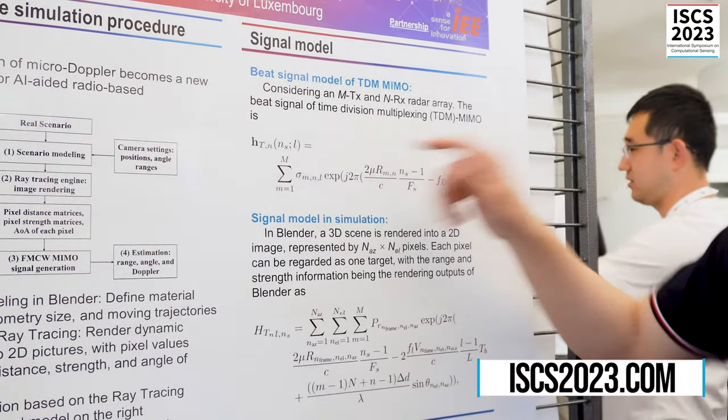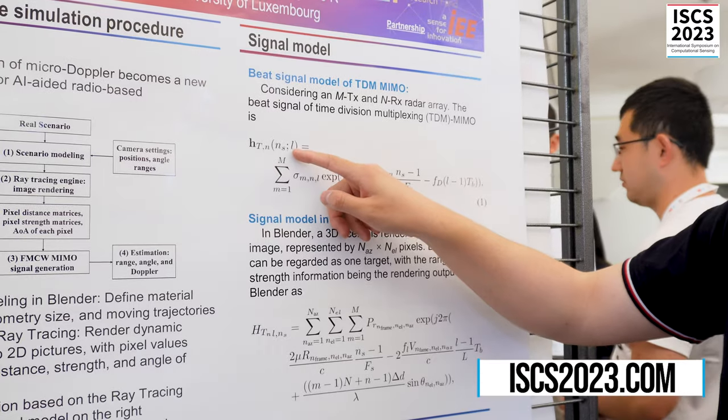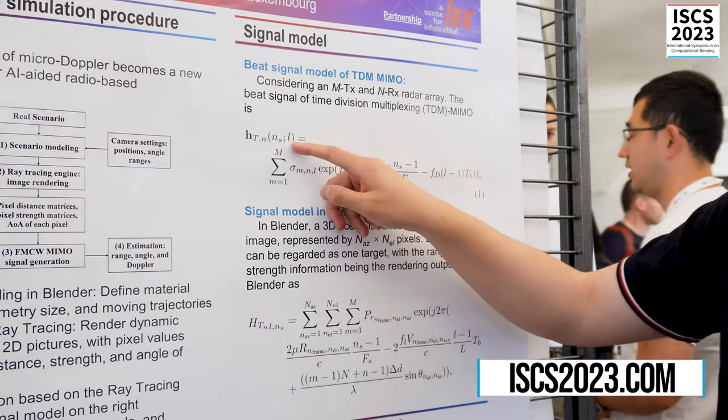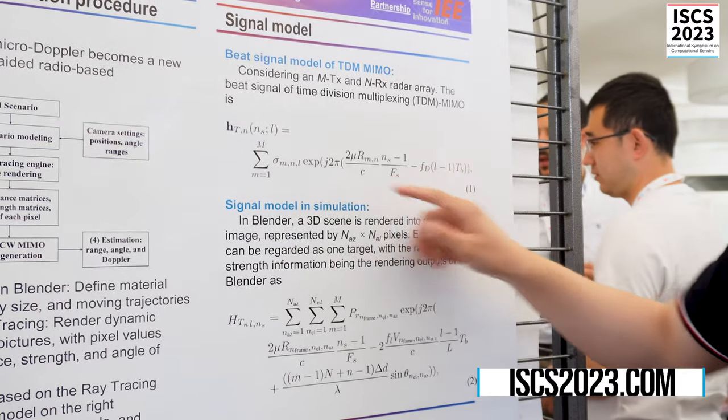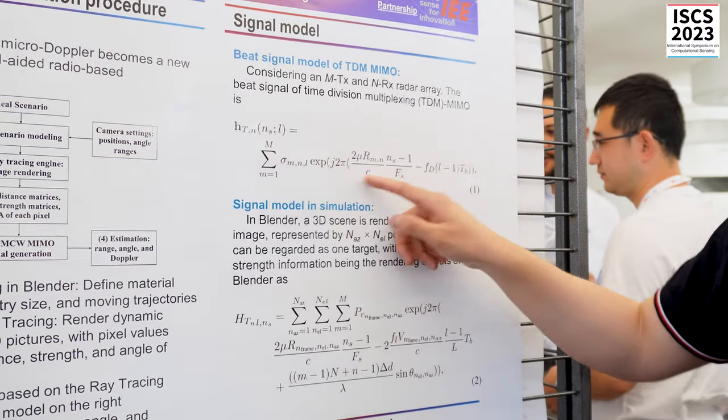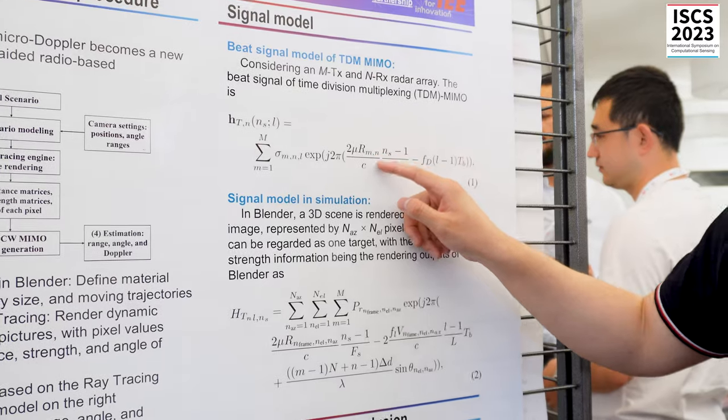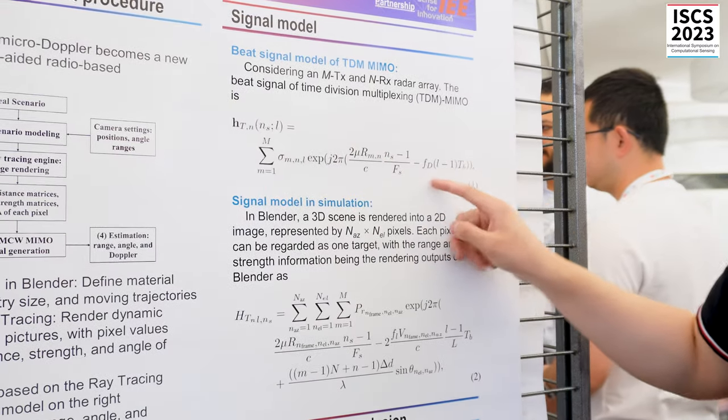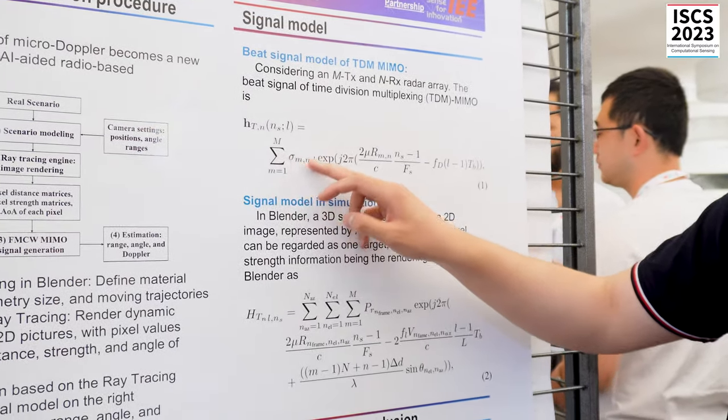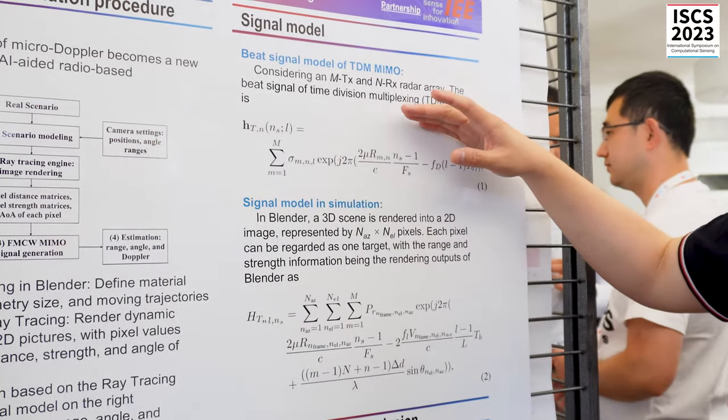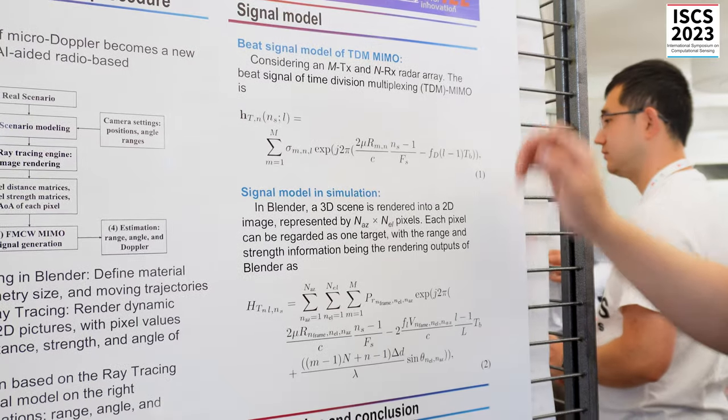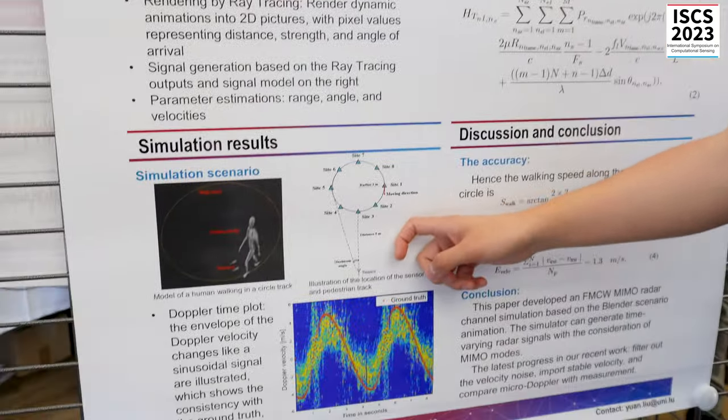In this signal model, m is slow time, so it relates to the velocity, and ns is the fast time, it relates to the range. So in this model, if we get the simulated information of the range, strength, and the Doppler, we can generate the radar signal models. So here is a simulation example.